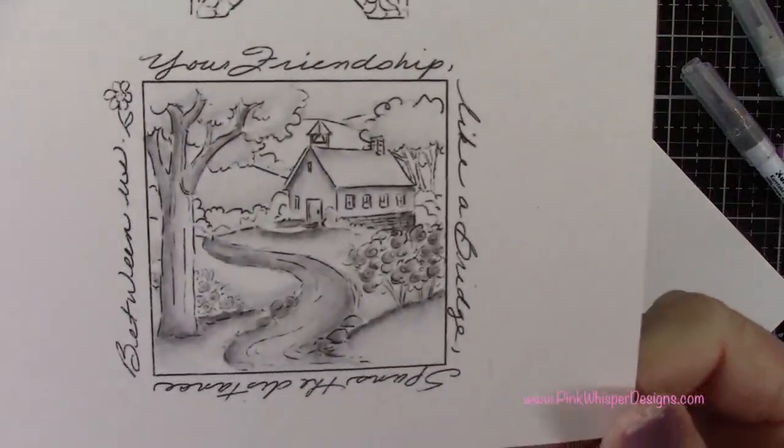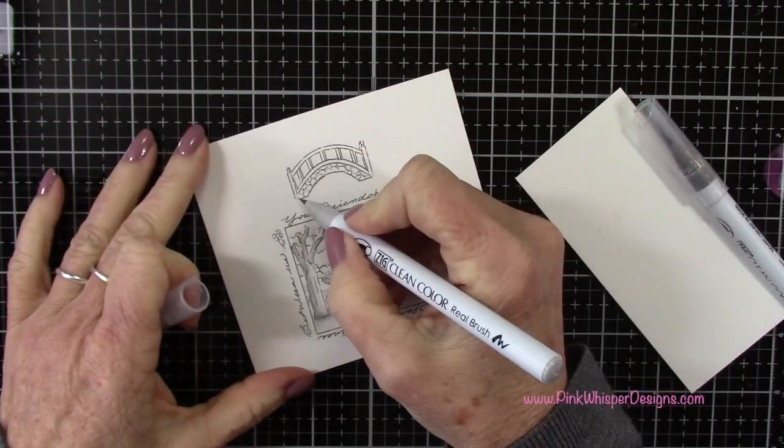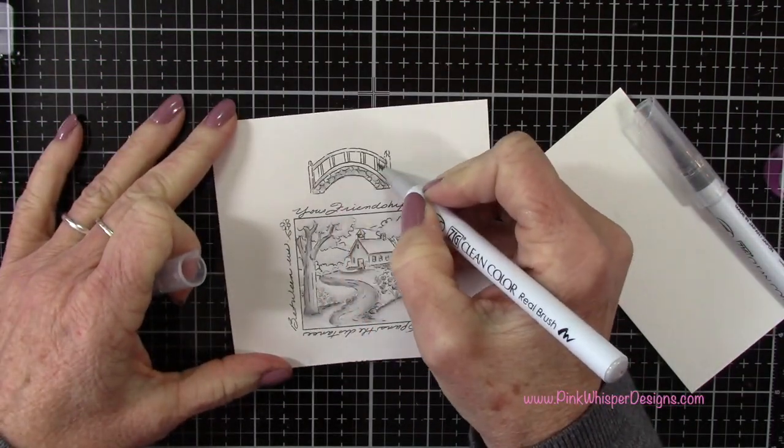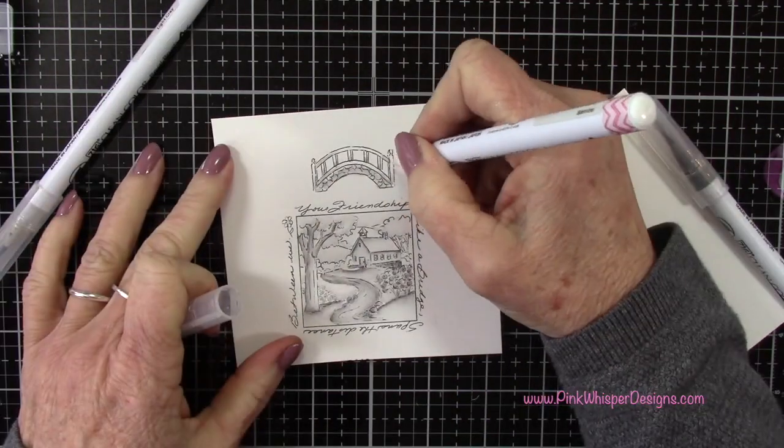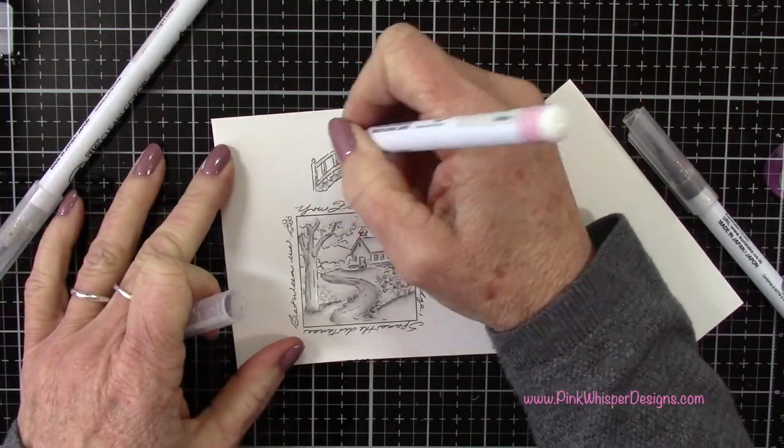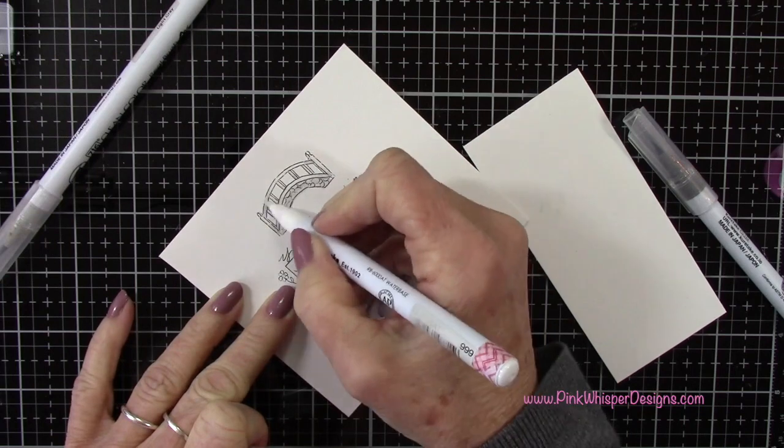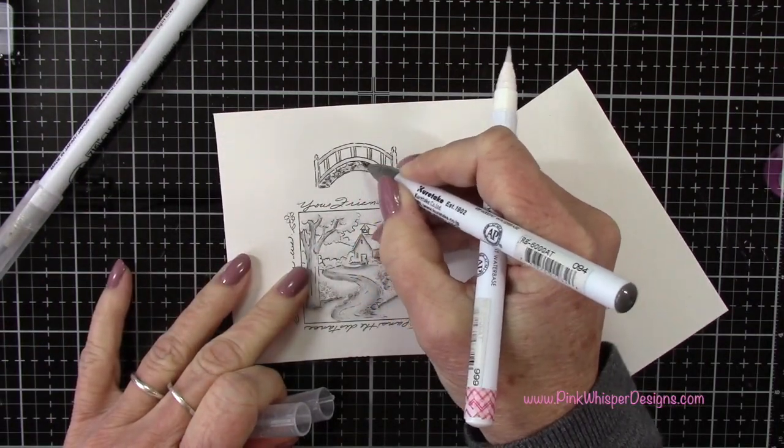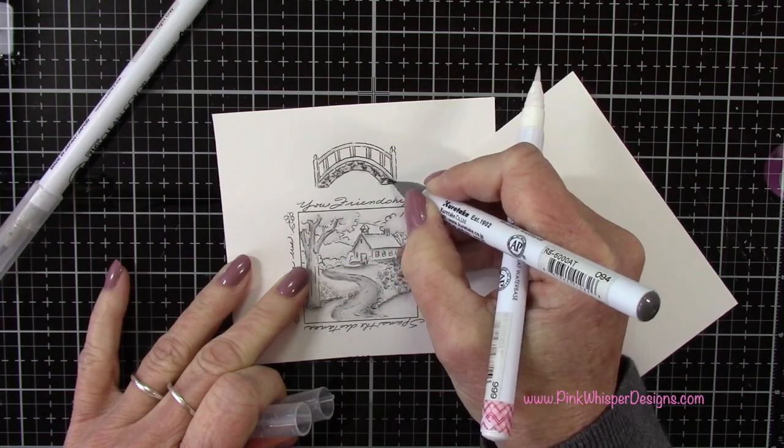I'll give you a quick look at that up close but we'll look at it again later on. Then I'm going to do the same thing here on the bridge, just adding some shadows to that railing and then I'll add some little shadows to each of those rocks as well, just adding a little dark there and then kind of pulling it over.